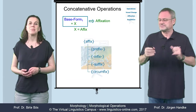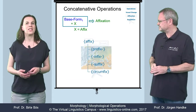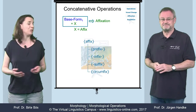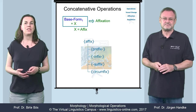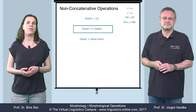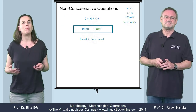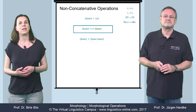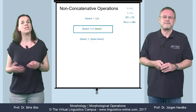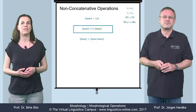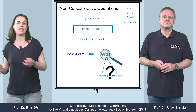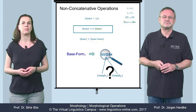But this picture of words consisting of a string of morphs is too simple. Besides affixation, there are quite a few other formal operations by which complex word forms can be generated. These operations are referred to as non-concatenative, since the resulting word cannot easily be segmented into morphs.